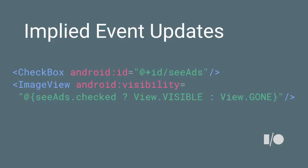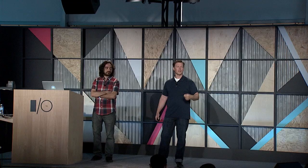We also have implied event updates. You can bind, for example, to a checked field in another view, because checked is a two-way data-bind field. So we can just say: that field over there was clicked on by the user, and we get an update right away. We know what happened.